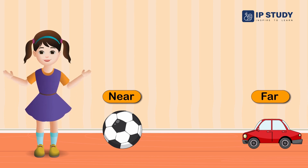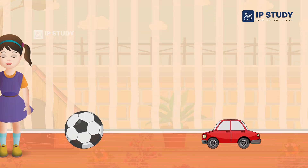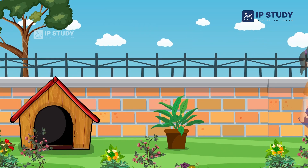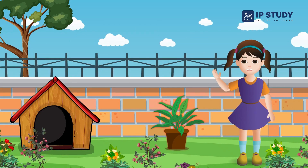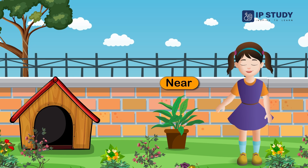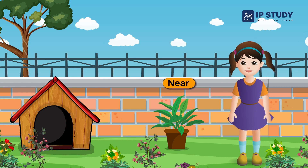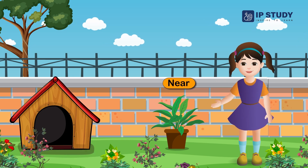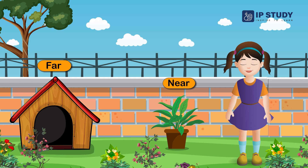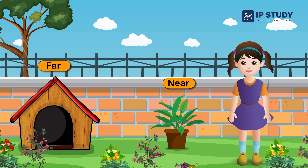Let's go to the garden and see something there. Look at this plant. It is near to me. And look at the dog's house. That is far from me.